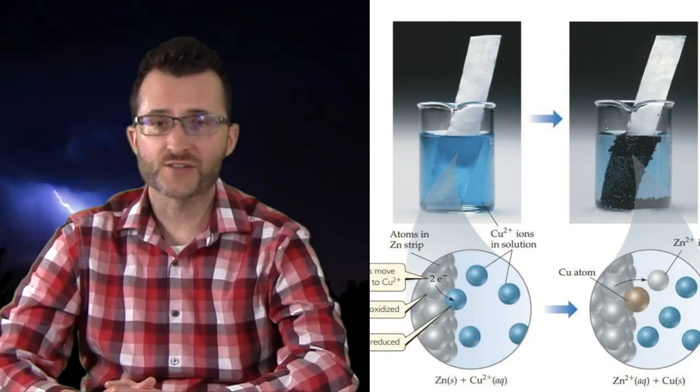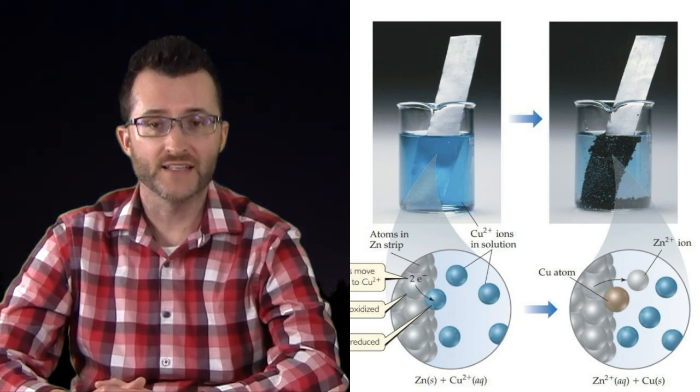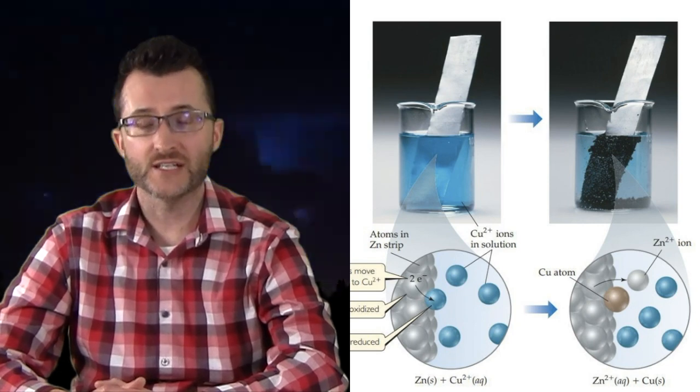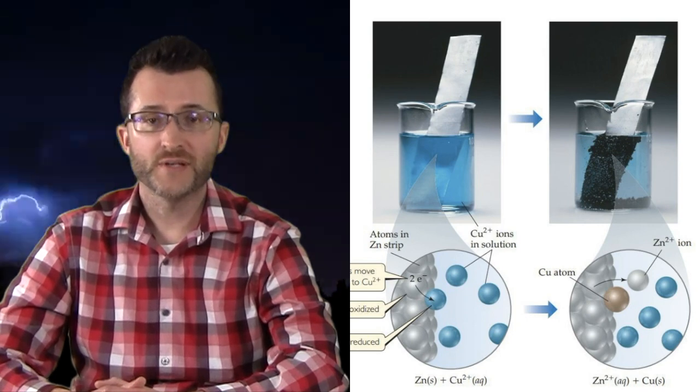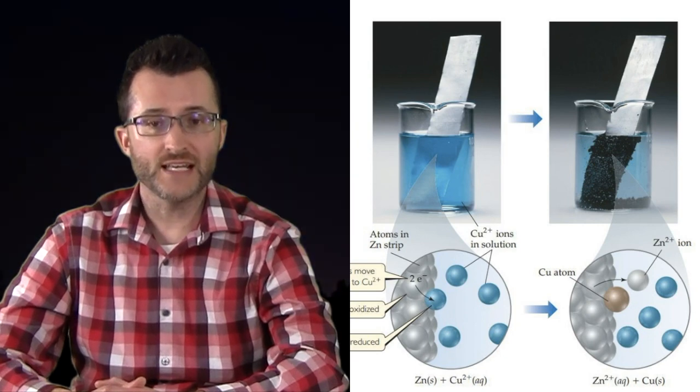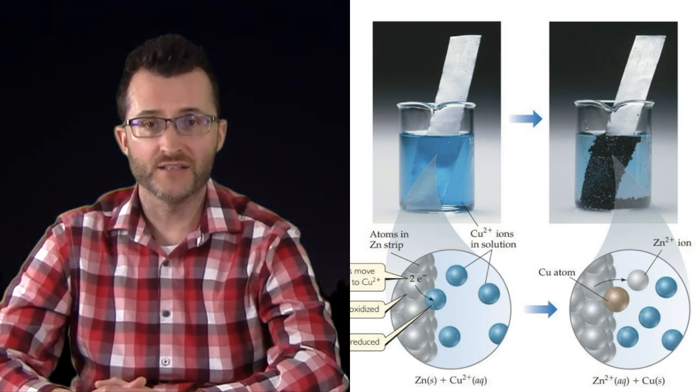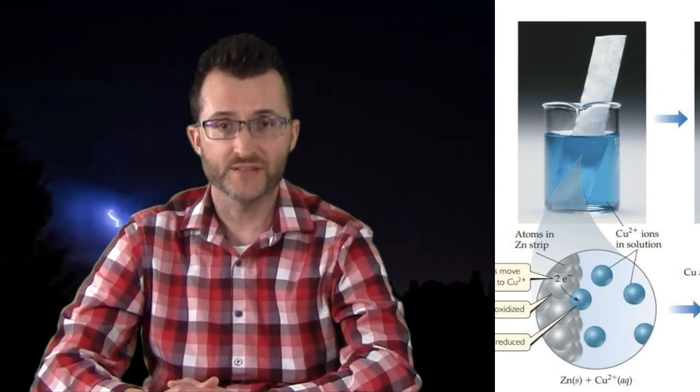This reaction is spontaneous and the buildup is observable. If we take a look at our pictures, we see zinc is placed in a solution of copper plus two ions on the left. And on the right, a reaction has occurred. We see that this reaction is spontaneous. This works because zinc is the more active metal compared to copper when looking at table J. So zinc is oxidized and it breaks down and copper plus two ion being less active is reduced and builds up.